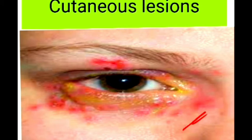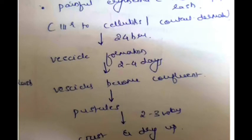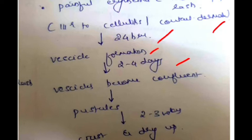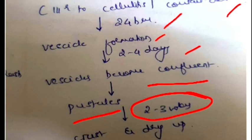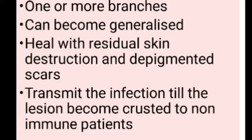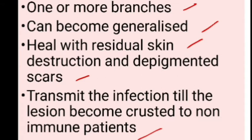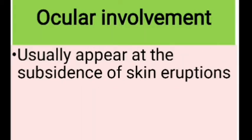Regarding skin lesions, the patient develops painful erythema with maculopapular rashes similar to cellulitis or contact dermatitis. Within 24 hours these form vesicles; within two to four days these vesicles become confluent forming pustules; within two to three weeks the pustules form crusts and start drying. These cutaneous lesions can involve one or more branches of the nerve or become generalized, and usually heal with residual skin destruction and depigmented scars. The patient can transmit infection until the lesion becomes crusted.